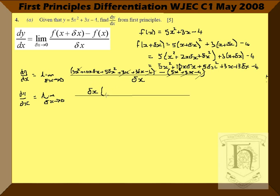There's a common factor there of δx. So I take that out: we've got 10x + 5δx (since δx² = δx·δx) + 3. The δx on the denominator will cancel out every time with the δx on the numerator.